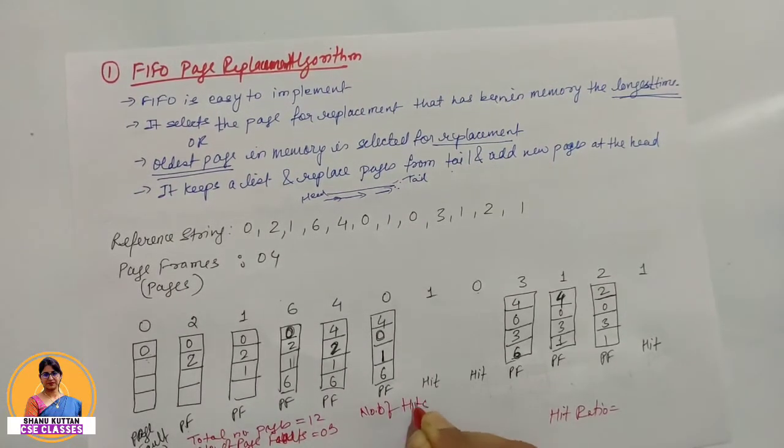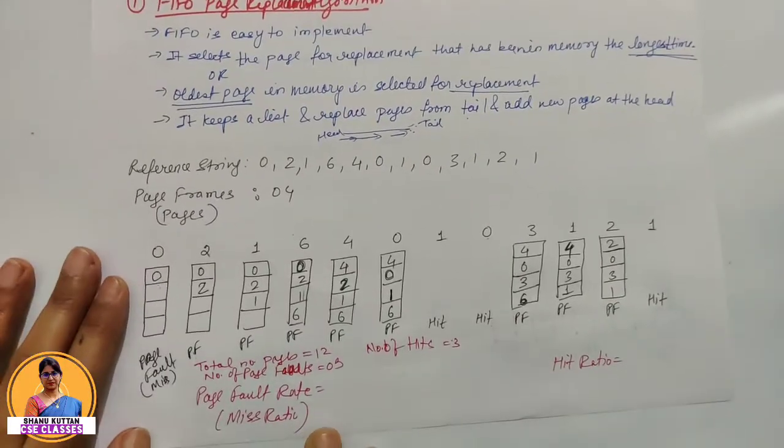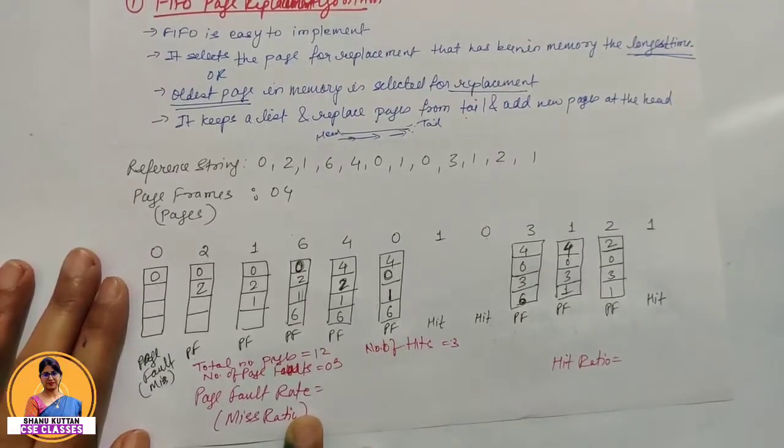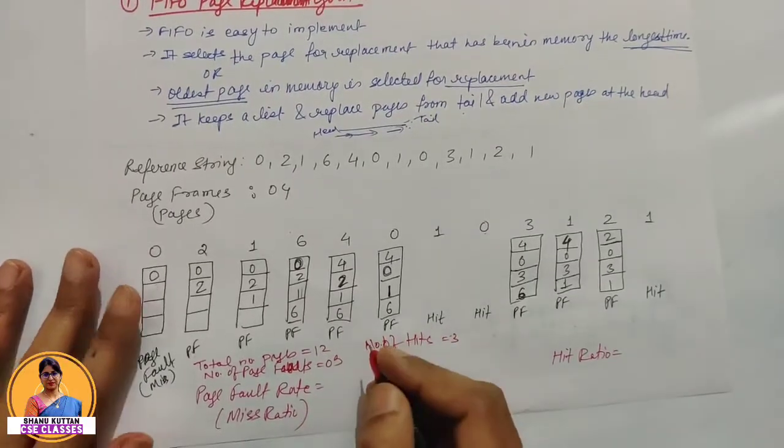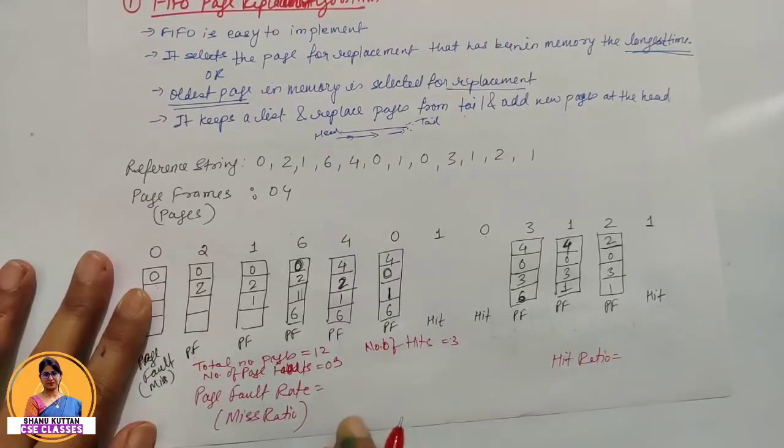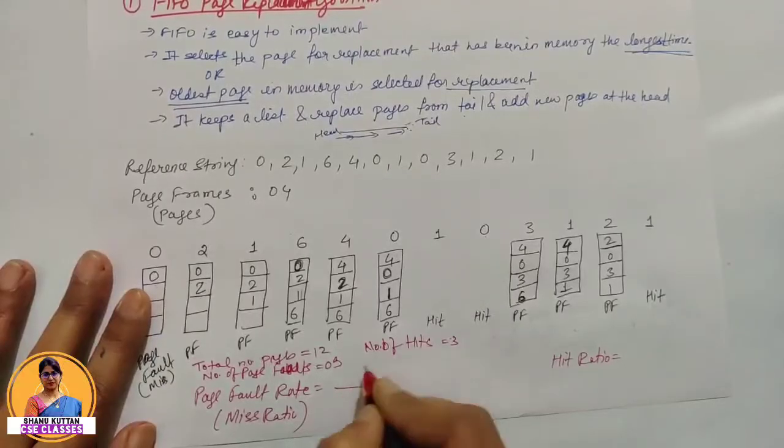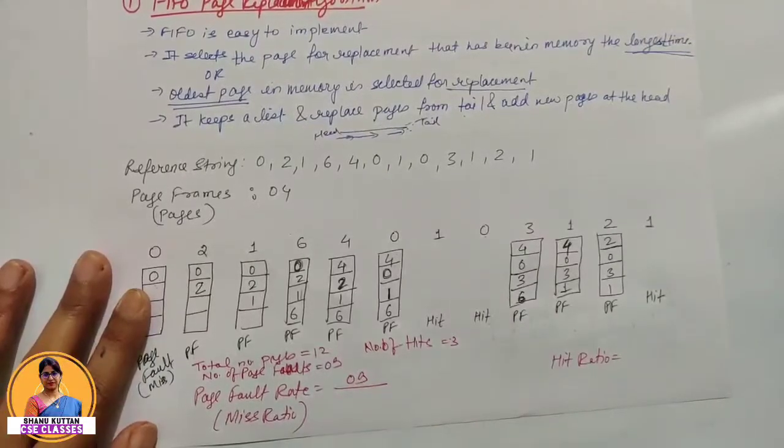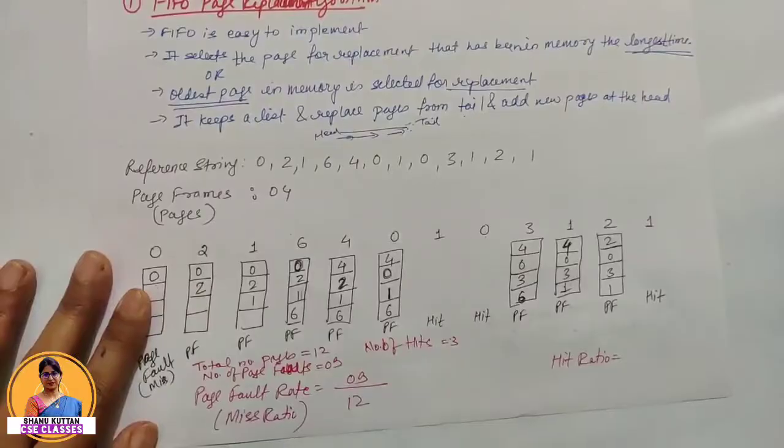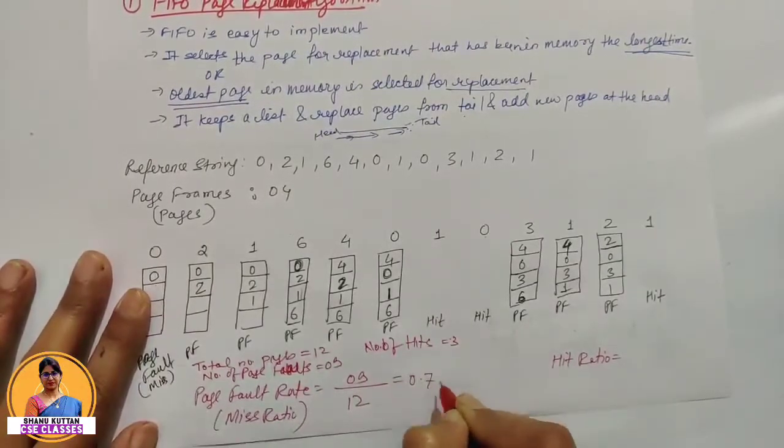Number of hits is 3. If you call it page fault rate or miss ratio, it is number of misses divided by total number of hits plus misses. So 9 divided by 12, which is 0.75.